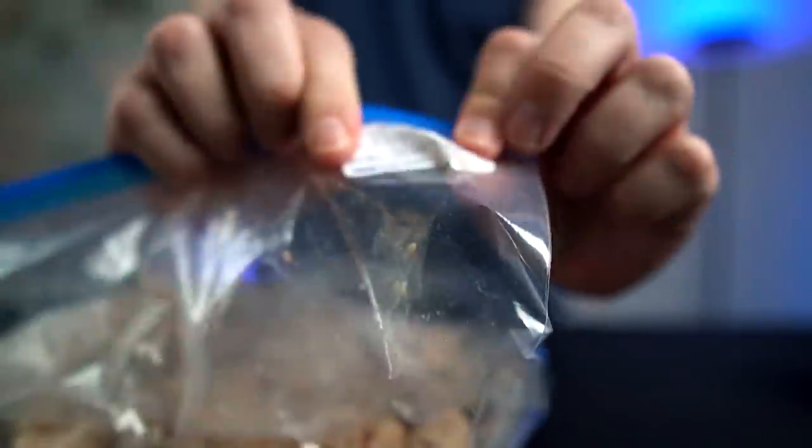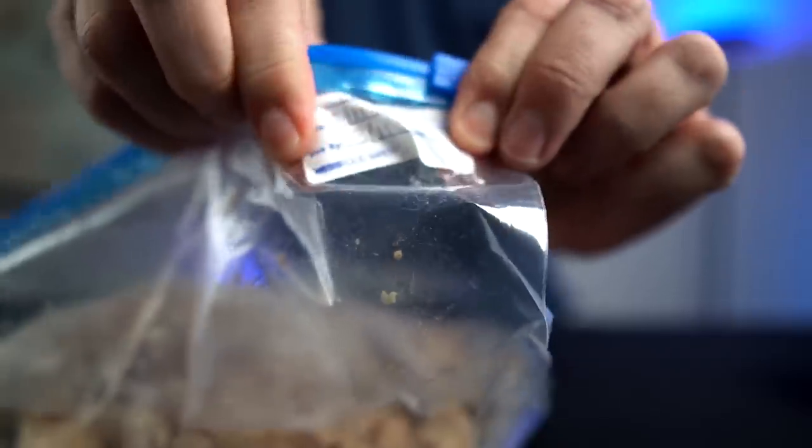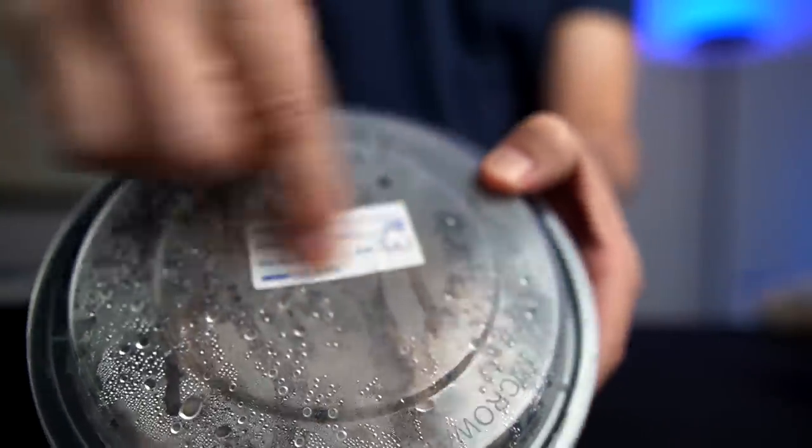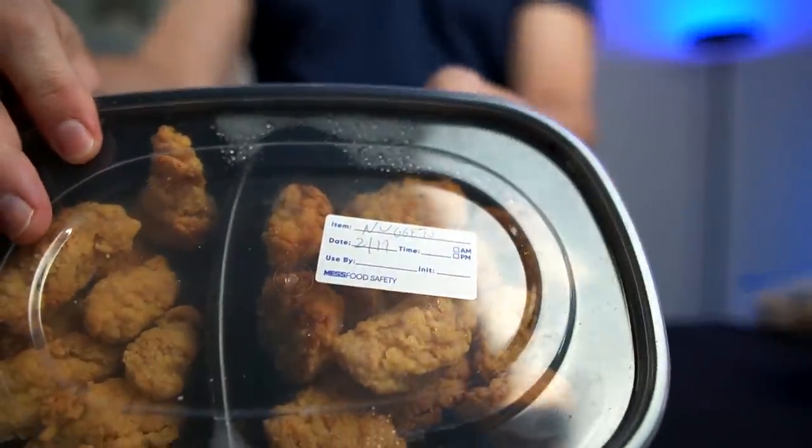Now this chicken label got a little bit smashed in the freezer actually, so it stayed in place but it got smashed. This one, there's also a little bit of moisture on the outside, but it seems like it held up okay. And the nuggets in the fridge, not too bad.